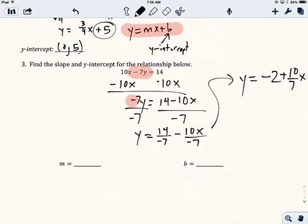My m value is my slope, and that's the number next to the variable x, which I can write as 10 over 7. And then the b value is the constant, and that's 0 negative 2.